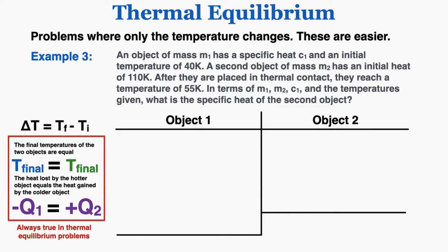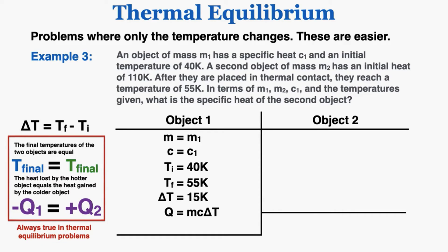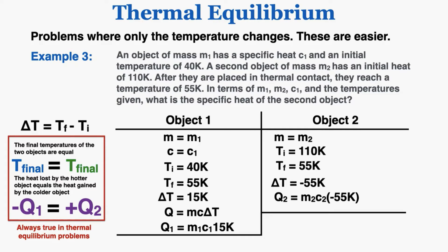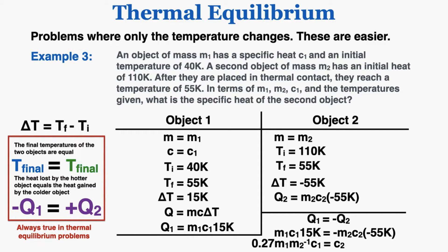Example 3: an object of mass M1 has specific heat C1 and an initial temperature of 40 Kelvin. A second object of mass M2 has an initial temperature of 110 Kelvin. After thermal contact they reach 55 Kelvin. In terms of M1, M2, C1, and the given temperatures, what is the specific heat C2 of the second object? Object 1 has a ΔT of +15 Kelvin, object 2 has a ΔT of −55 Kelvin. Setting Q1 = −Q2 and solving for C2 gives C2 = 0.27 · M1 · M2⁻¹ · C1.